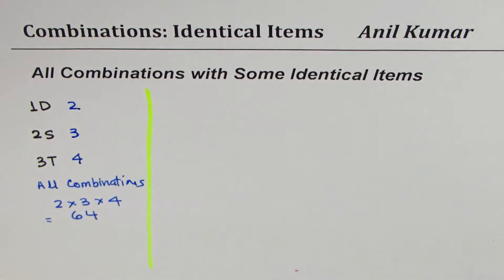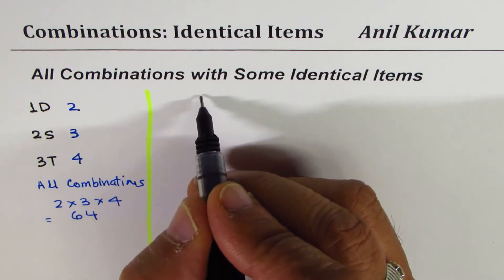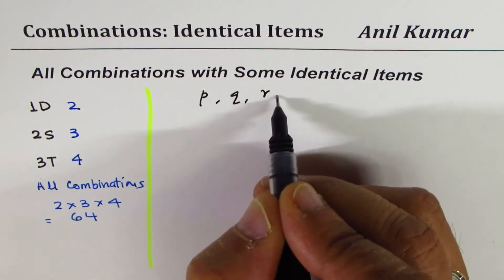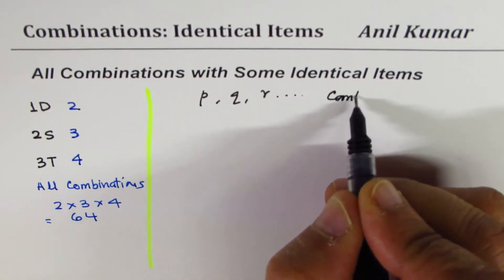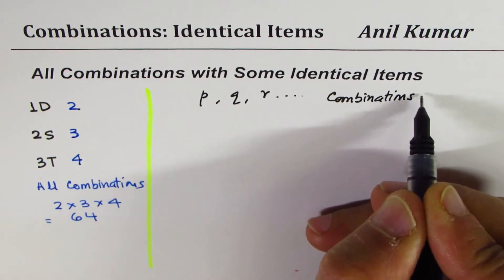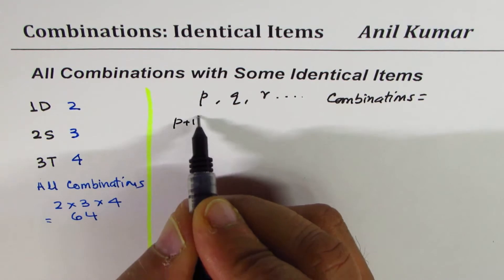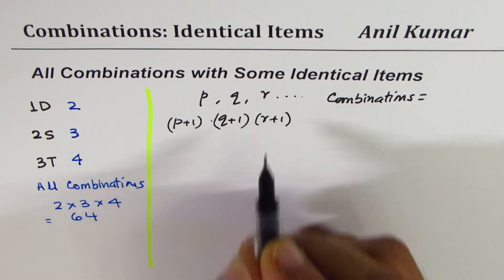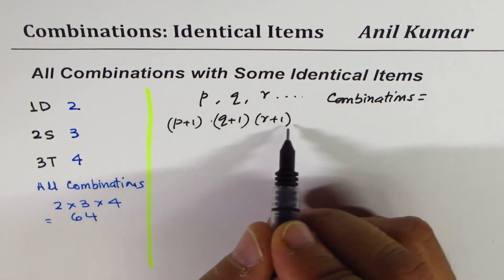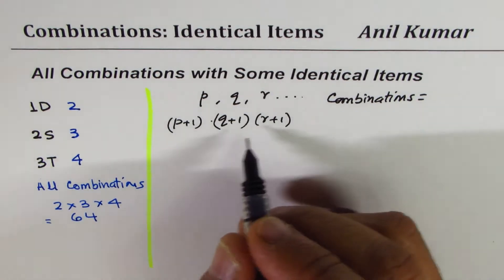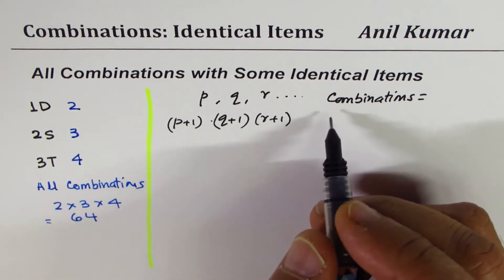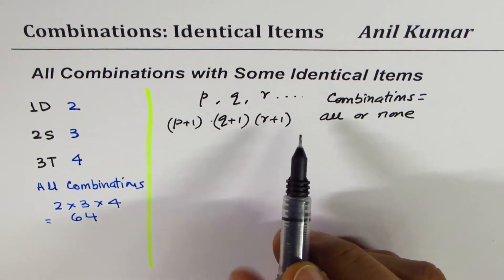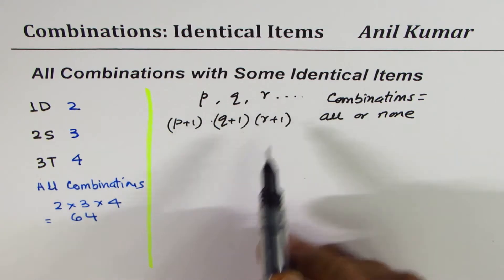If we have p of one kind, and q of the other kind, and r of the third kind and so on, then the number of combinations is how many? Each will give you p plus one, q will give you q plus one, r will give you r plus one, and multiplication of this will be our solution. That is the number of combinations when we select all or none. In this selection we have included not selecting any one of them as one of our combinations.